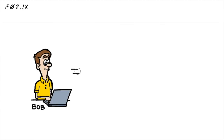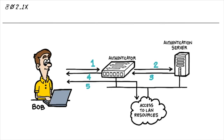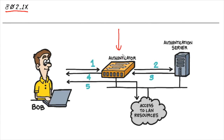On our networks, we can take the same approach of finding out who individuals are before even giving them access into the network. And it can be implemented with a technique called 802.1X. This can be applied to physical environments with Ethernet switches, and we can also apply the same kind of technique for wireless access into our networks.